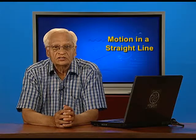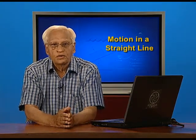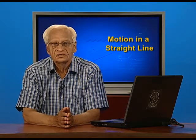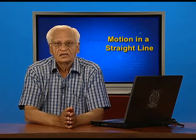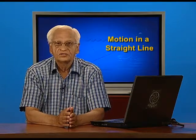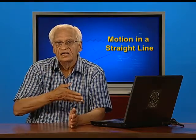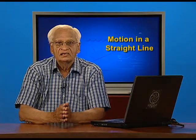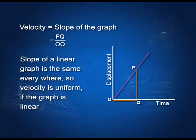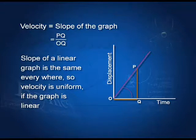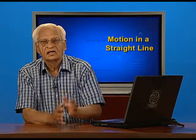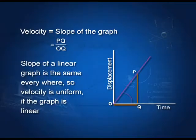Velocity is equal to the slope of the displacement-time graph, as we saw in the last lecture. The slope of a linear graph is constant — it is the same everywhere. So if the graph between displacement and time is linear, then the velocity is uniform. We measure the slope by taking the displacement at a certain time divided by the time taken. If the graph is linear, the slope is constant and therefore the velocity is uniform.